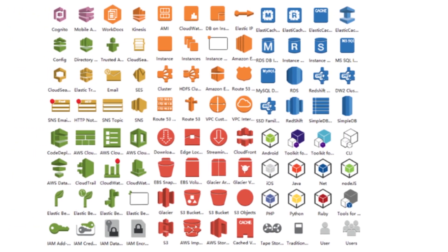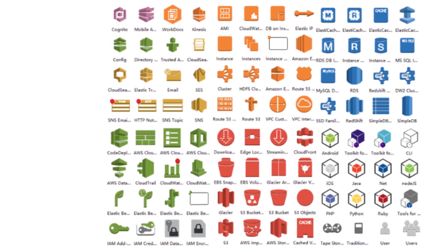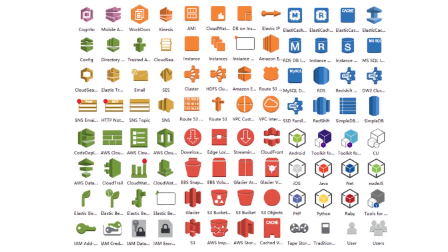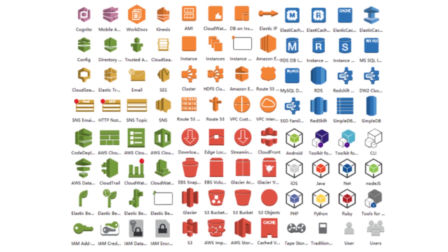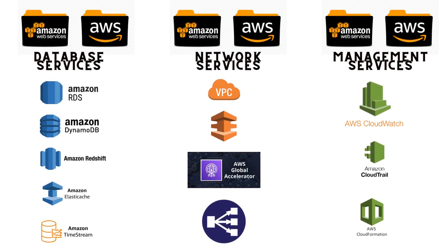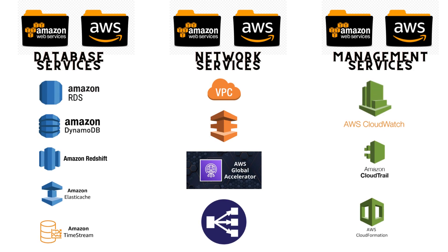AWS provides a wide range of services to cater to everybody's needs — more than 199 services currently. For data services, we have Amazon RDS, DynamoDB, Amazon Redshift, ElastiCache, Amazon Timestream, Amazon QLDB, and Amazon Neptune. For network services, we have Amazon VPC, Amazon Direct Connect, Amazon Global Accelerator, AWS VPN, and a load balancer.